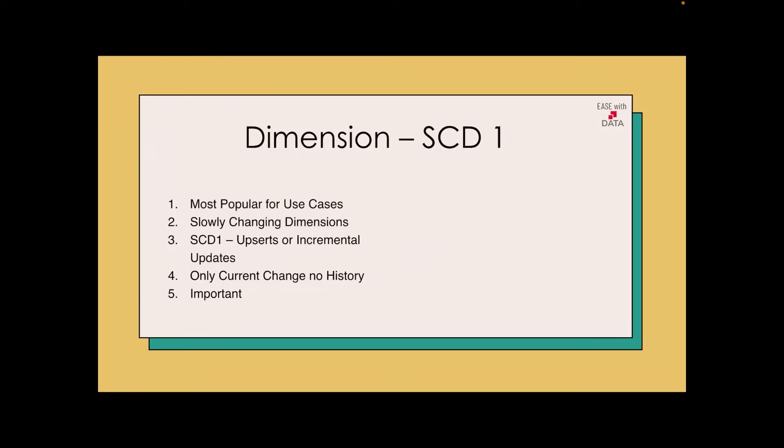Today we're going to discuss Slowly Changing Dimension Type 1, also known as SCD1. It basically supports incremental updates or upserts. It is one of the most popular dimension tables used throughout data warehousing.